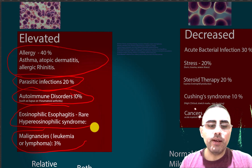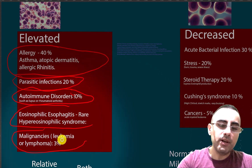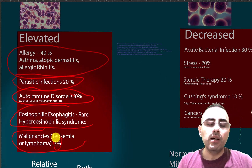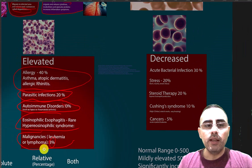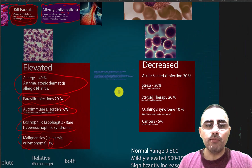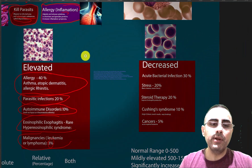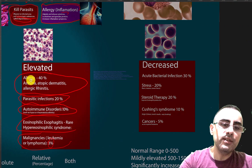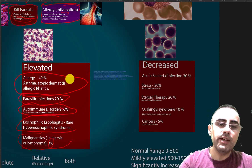Much rarer is eosinophilic esophagitis, and rare also are malignancies such as leukemia or lymphoma, in about 3% of cases.